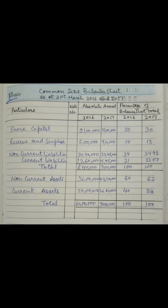First we have to write all the details given in the question in the absolute amount column. On the particulars column we have to write equity and liabilities, following the vertical format, and after that all the assets. The first particular written here is share capital, and the absolute amount for the year 2016 and 2017 is 21 lakhs in both cases.